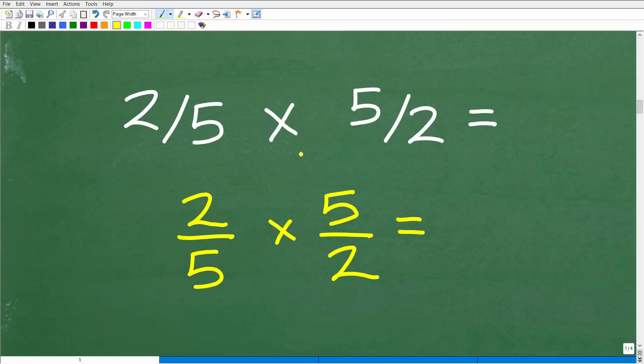So we're down to 2 fifths times 5 halves, right? So this is the result of going from division to multiplication. We flip this fraction upside down to the right. So now we have 5 halves. Now, stylistically, okay, some students, some people like to write their fractions with an angled fraction bar like so. And that's perfectly fine.